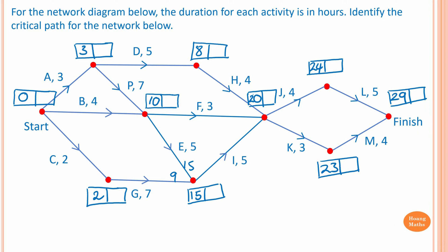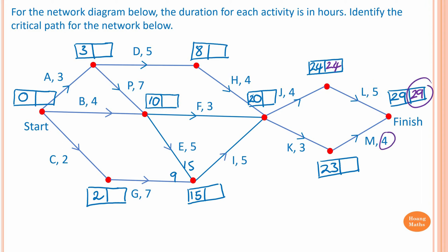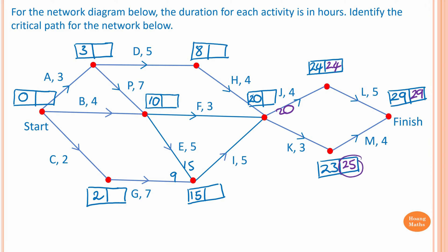For backward scanning, the finish is twenty-nine. Going backward we subtract: twenty-nine minus five is twenty-four, and twenty-nine minus four is twenty-five. For activities K and J: twenty-four minus four is twenty, and twenty-five minus three is twenty-two. Remember, for backward scanning we pick the smallest number, so the latest starting time here is twenty.